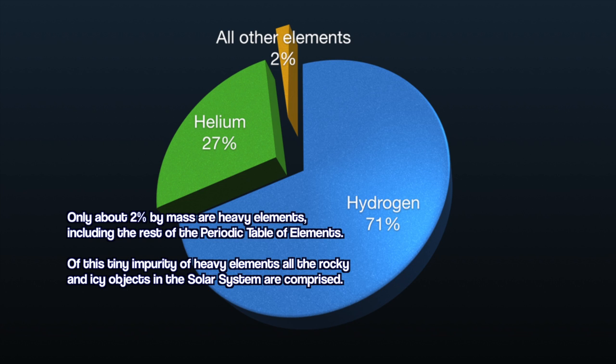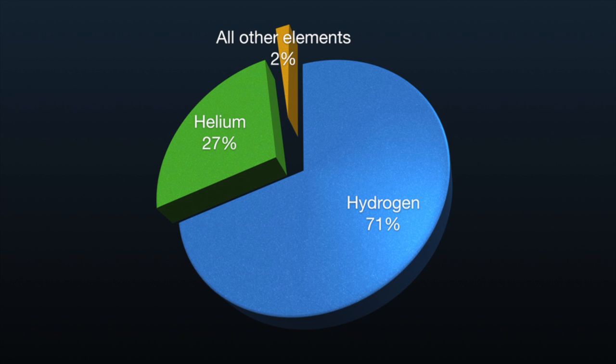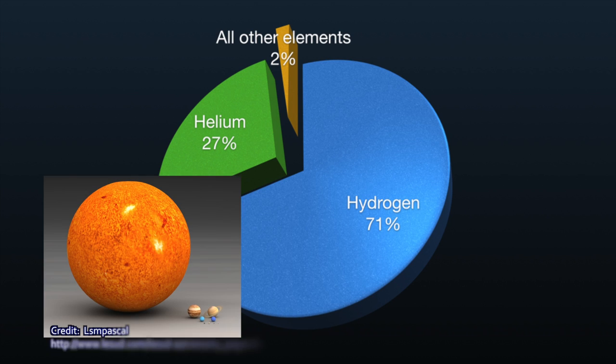The Sun is 99.9% of the mass in the solar system. To a first approximation, the Sun is the solar system. The planets are tiny by comparison, but they are made up of that two percent, largely.